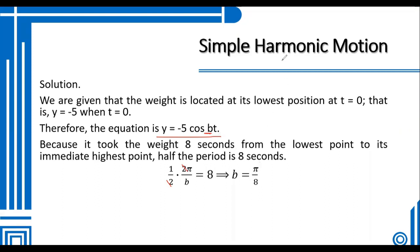By substituting the constant b, the equation is in the form y = -5 cos(πt/8). Thus, the equation of the motion is y = -5 cos(πt/8).